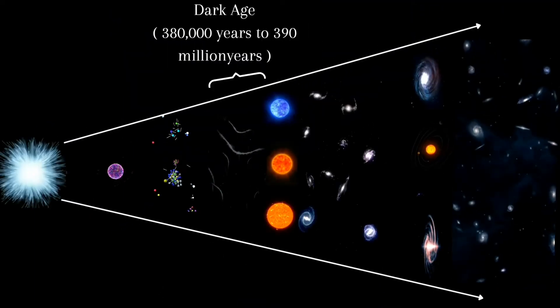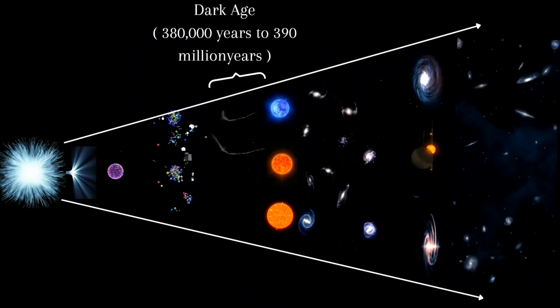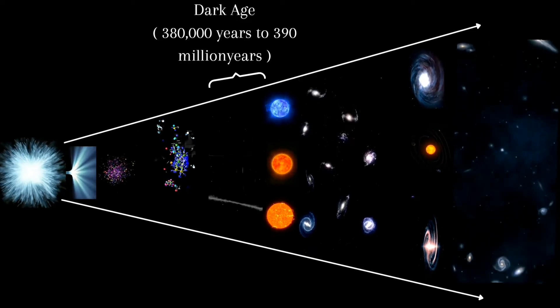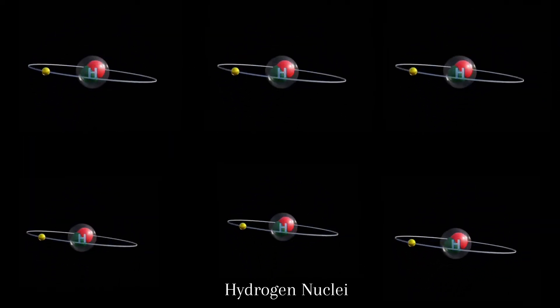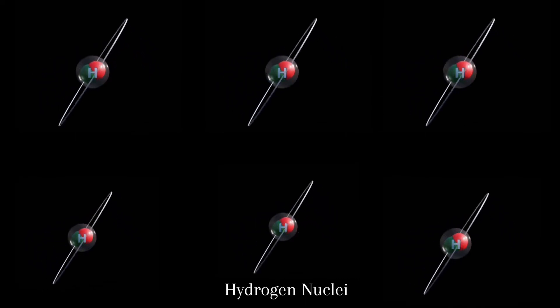But around 380,000 years after the Big Bang, when empty space really was empty—no planets, no stars, no galaxies—this era was known as the Dark Age. In this Dark Age, when conditions cooled enough, these protons started to capture electrons to form neutral hydrogen nuclei by releasing energy in the form of photons.